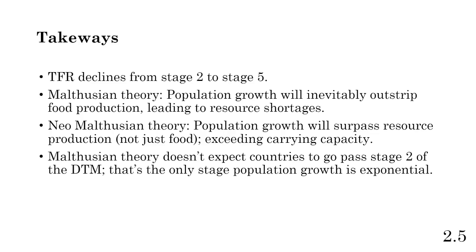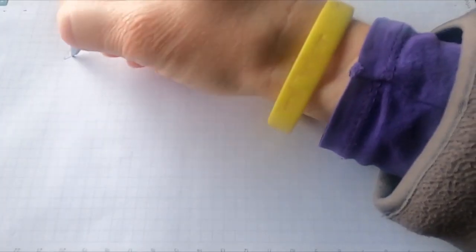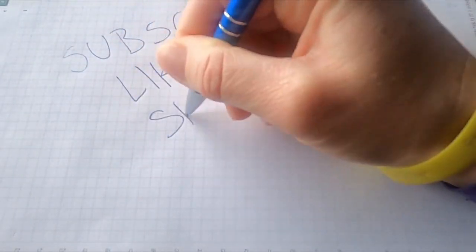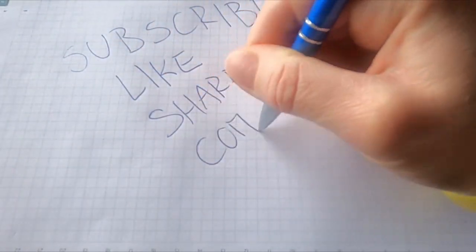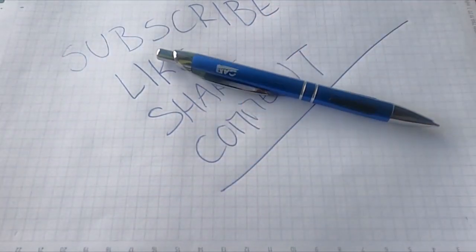In countries in Stage 5 like Iceland, Greece, or Spain, population growth may actually be negative — a declining, aging population. While the DTM is not an economic model, as countries progress their economies are typically more manufacturing-based, then shift into service and tech-based economies with more female employment. Thank you so much for watching — please like and subscribe. If you have any questions about AP Human Geography content or this FRQ, leave a comment below. I have more AP Human Geography videos on lectures, FRQs, and MCQs on my channel. See you in the next video!